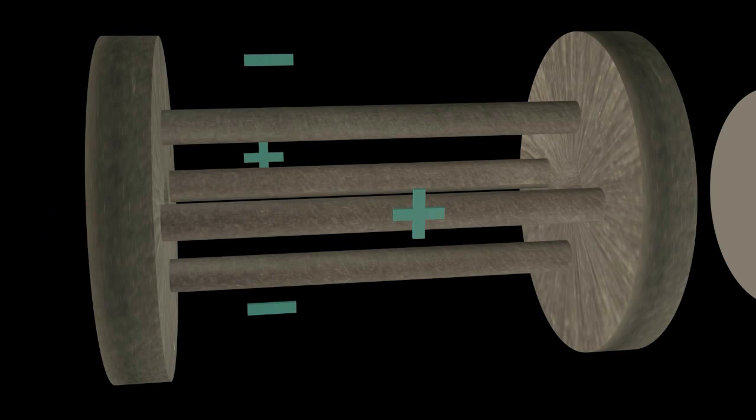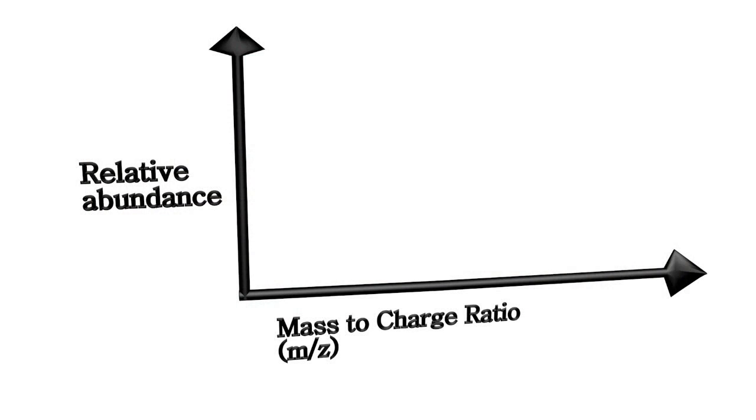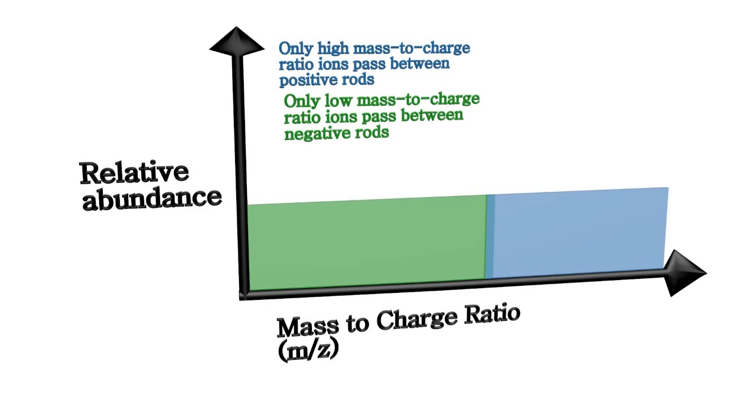In the quadrupole there are four rods, where two rods have a negative DC voltage and two have a positive DC voltage. The opposing positive rods lead through only high mass-to-charge ratio ions, while the opposing negative rods lead through only ions with smaller mass-to-charge ratio.